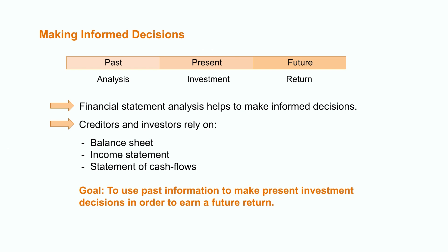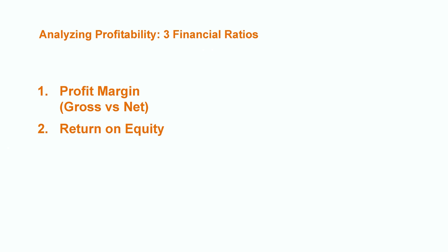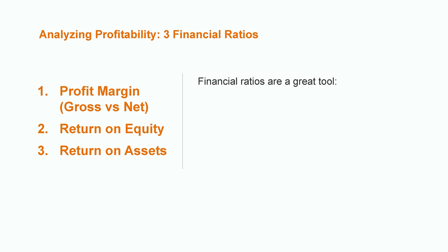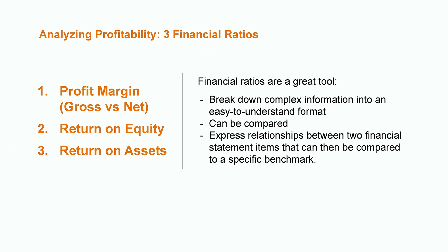There are many tools that we can use to analyze a company's profitability. However, we're going to discuss one of the most common methods that give us the most bang for our buck: financial ratios. We'll look at three of the most useful financial ratios when it comes to analyzing profitability — profit margin, return on equity, and return on assets. Financial ratios are one of the greatest tools in financial statement analysis because they break down complex data into a form that's easy to understand, interpret, and make comparisons. They allow us to express the relationship between two financial statement items as a figure that we can use to compare to a specific benchmark.